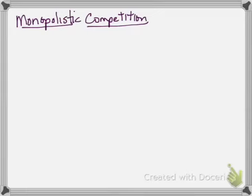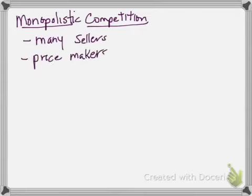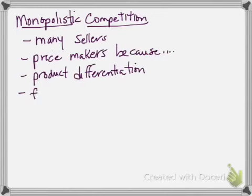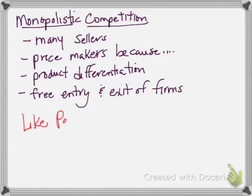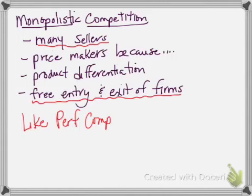All right, we're only going to have one screencast dealing with monopolistic competition so let's start with the characteristics. Monopolistic competition has many small sellers typically. They are price makers because they sell a differentiated product and there's free entry and exit of firms.